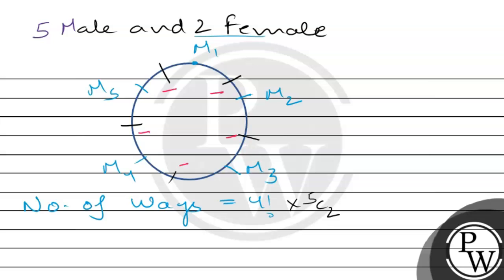In these 5 positions, we need to choose 2 positions for the females, which can be done in 5C2 ways. The 2 females can then be arranged among themselves in 2 factorial ways. So the total is 4 factorial multiplied by 5C2 multiplied by 2 factorial. Now, 5C2 equals 5 factorial divided by 2 factorial times 3 factorial, and the factorials cancel to give 10.